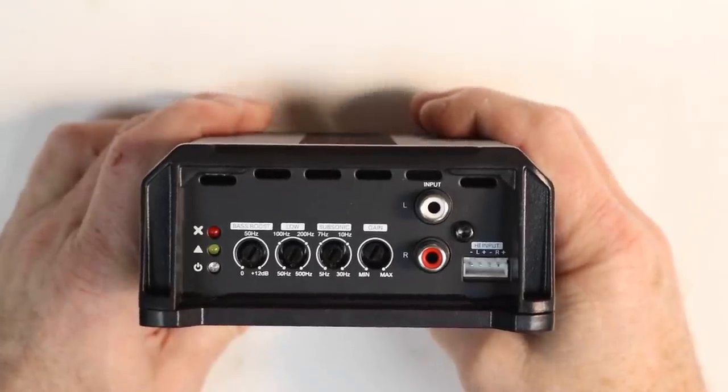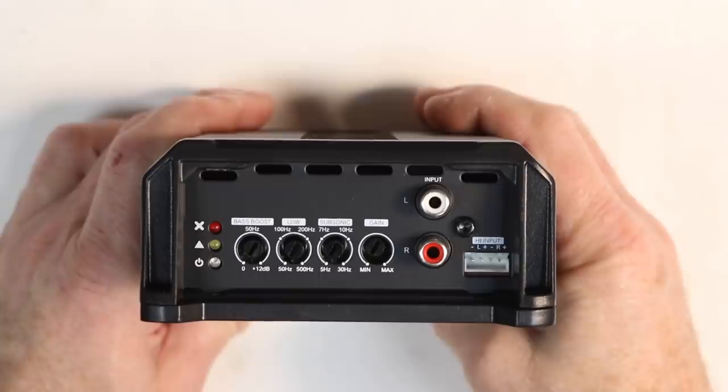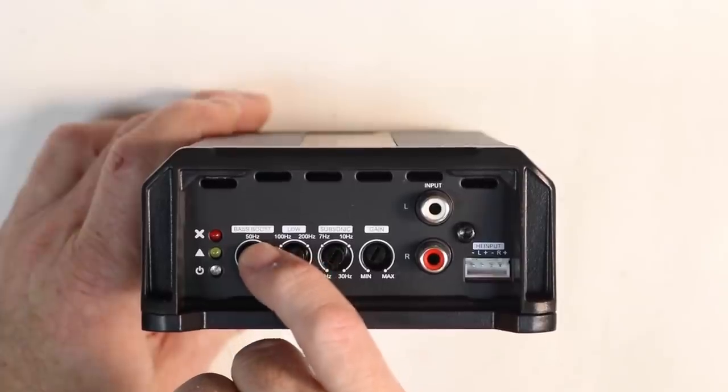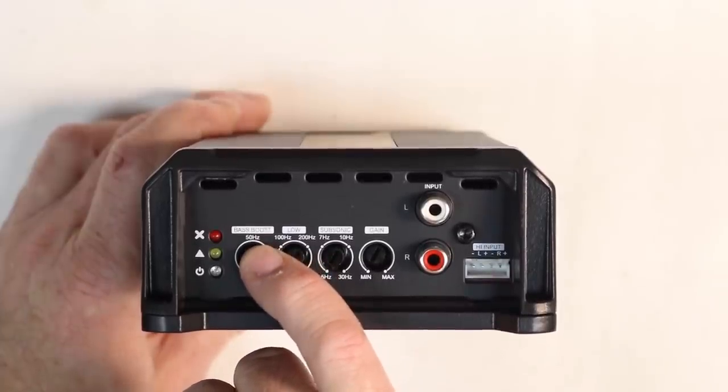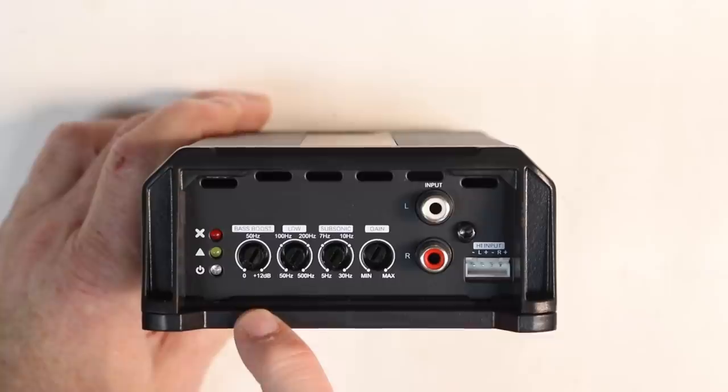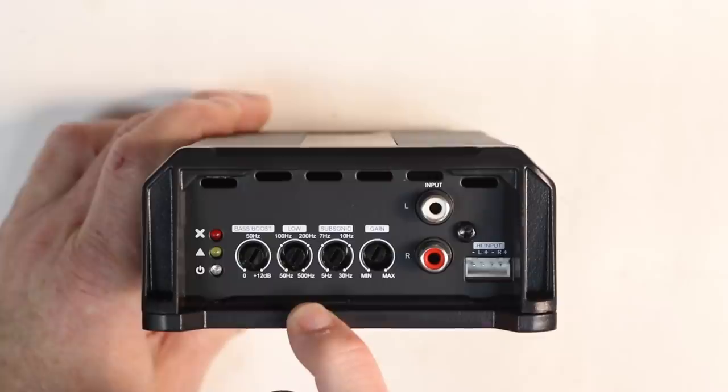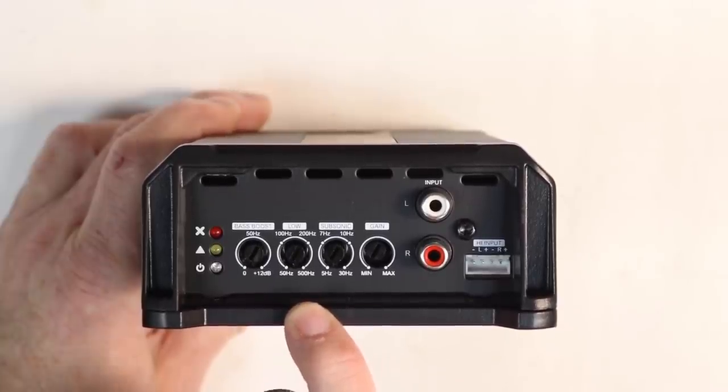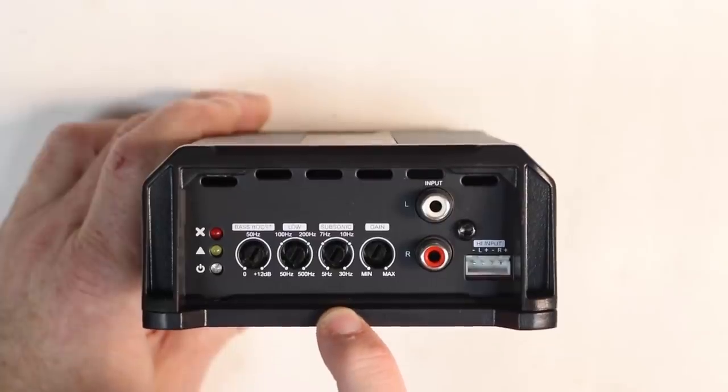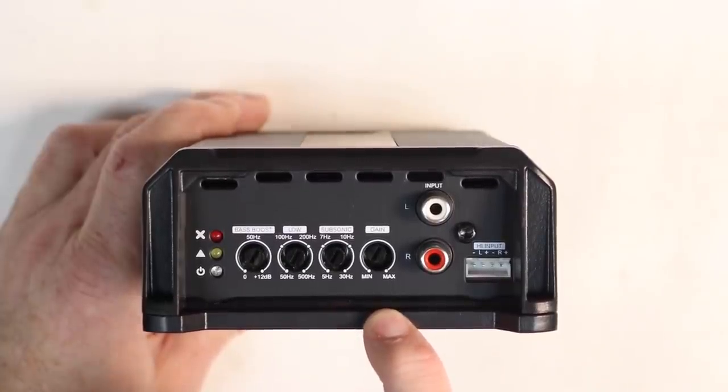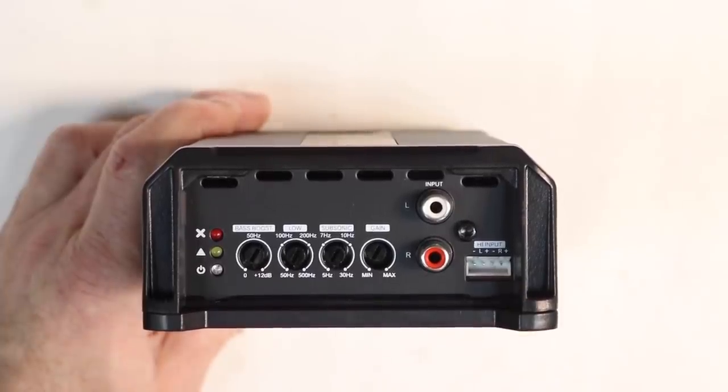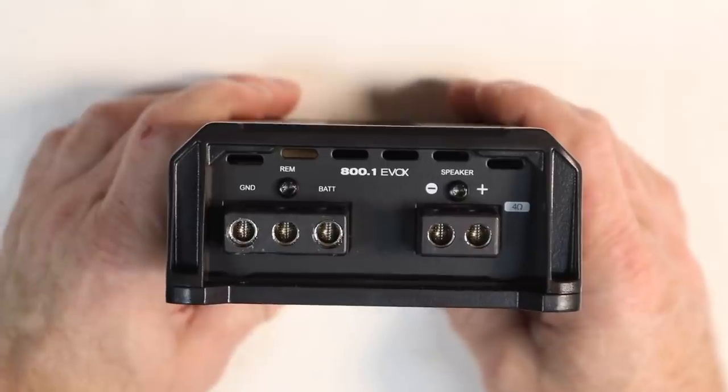Taking a look at the 801 it adds a few features that the 404 doesn't have and those are over here in the power section. You have a power light, a clip indicator, and a protection light. Control wise you have base boost which is centered at 50 hertz for 0 to 12 dbs of gain. Low pass crossover variable between 50 and 500 hertz. A subsonic filter that's variable between 5 and 30 hertz. Gain control. You have your two line level inputs along with your high level input over here in the corner.